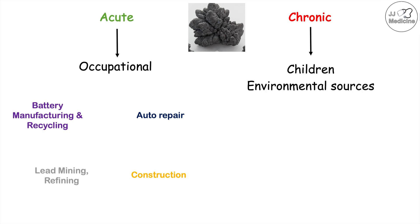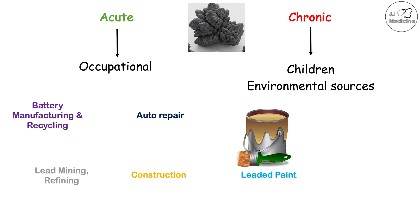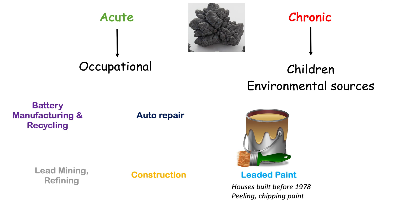With regards to chronic forms, this is going to most commonly affect children. It's going to be insidious — a slow exposure over time — and this is most commonly going to be from environmental sources. These include leaded paint, which has been phased out in much of the developed world. This is most important in houses built before 1978, particularly when that paint is peeling or chipping.